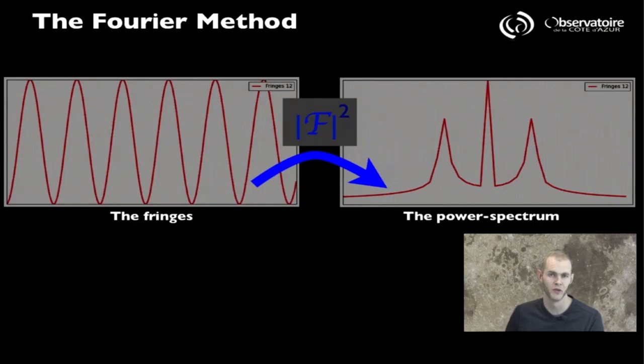Or more precisely, what I'm plotting here on the screen is the square modulus of the Fourier transform of that fringe function. Something that we usually refer to as the power spectrum of the fringes.